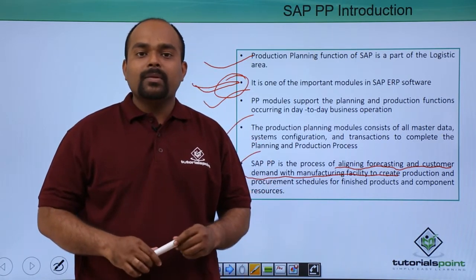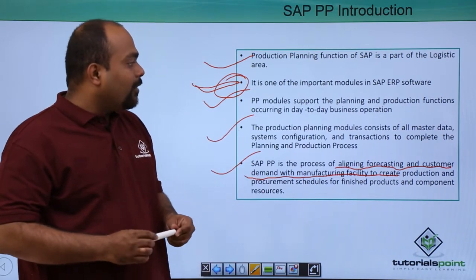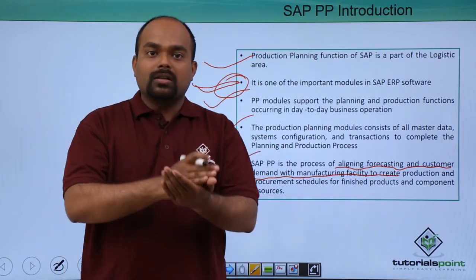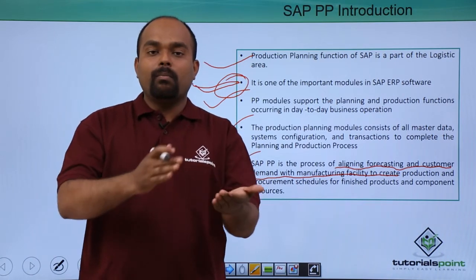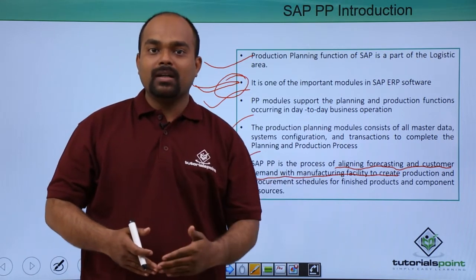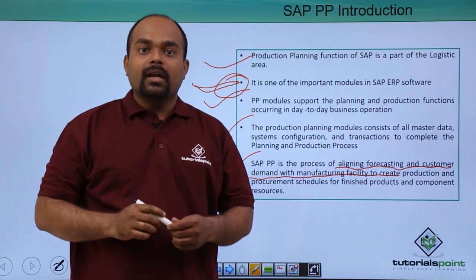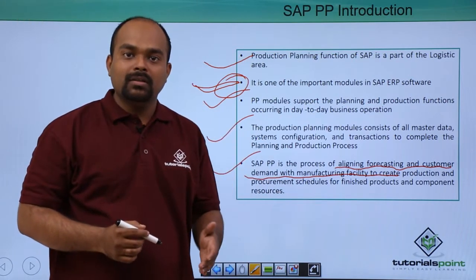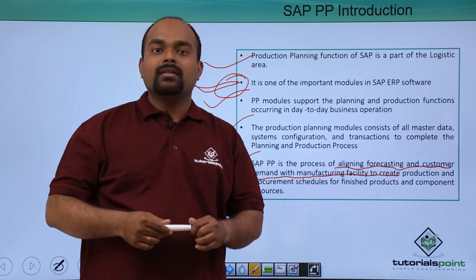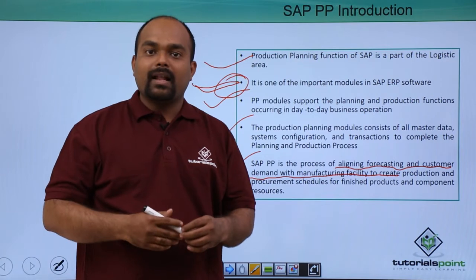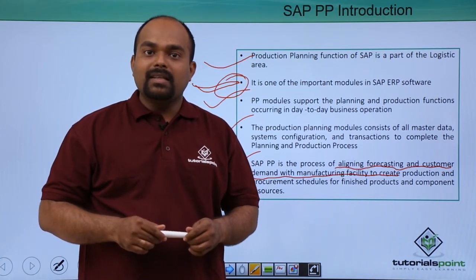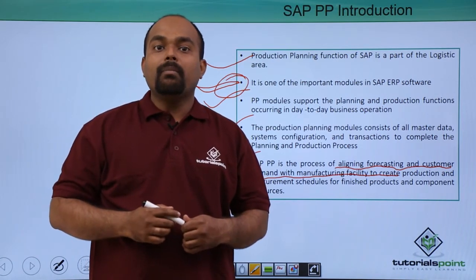Suppose we have one industry demanding a particular manufactured product. The demand can come from the customer or from forecasting. If demand comes from the customer, it will come through a sales order. If demand comes from forecasting, that is the plan independent requirement, which goes towards the production order, and then the production order drives the actual production. SAP PP works under different demand management scenarios.